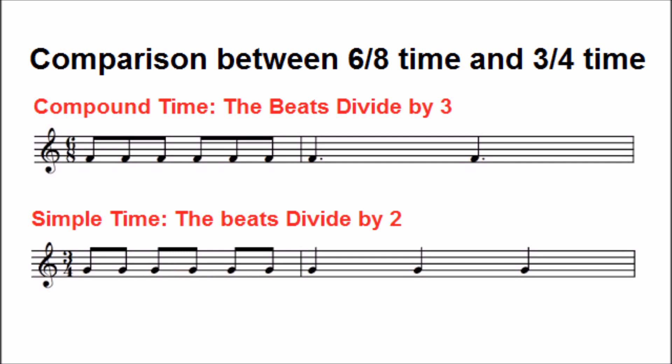6-8 time literally means there are six quavers in a bar, but there are not six beats in a bar. Instead, there are two dotted crotchet beats in a bar, and each dotted crotchet is worth three quavers.